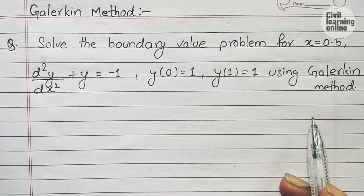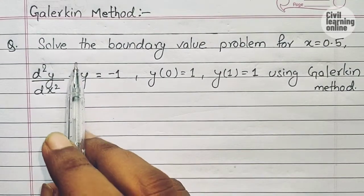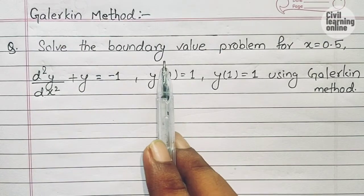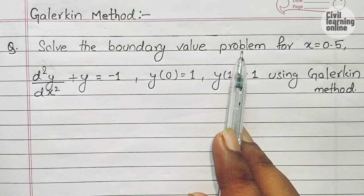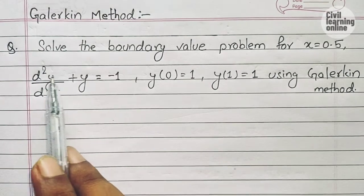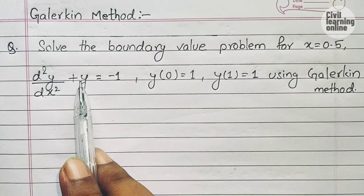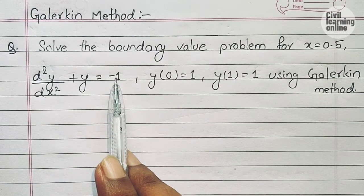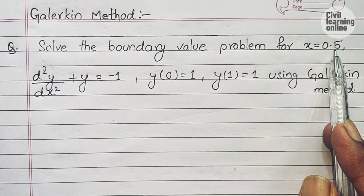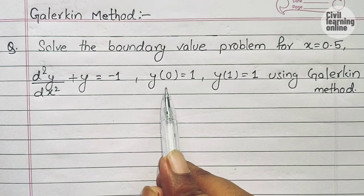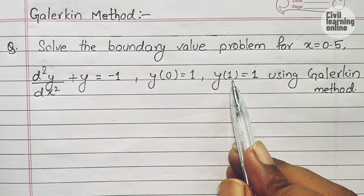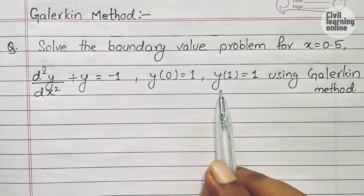Welcome to Civil Learning Online. Today we will be discussing the Galerkin method, which is a method to solve boundary value problems. The given question asks us to solve the equation d²y/dx² + y = -1 and find the value of y at x = 0.5 using the Galerkin method. The boundary conditions provided are y(0) = 1 and y(1) = 1.